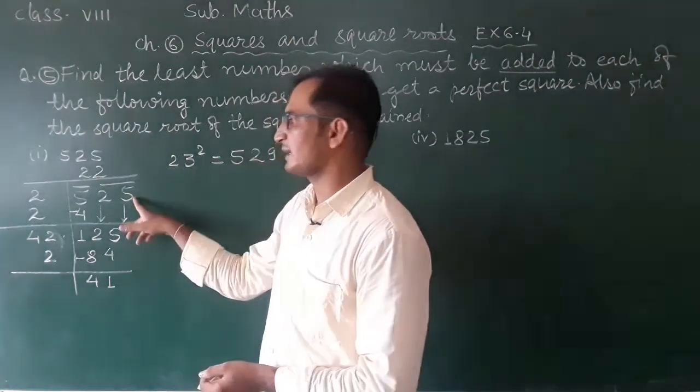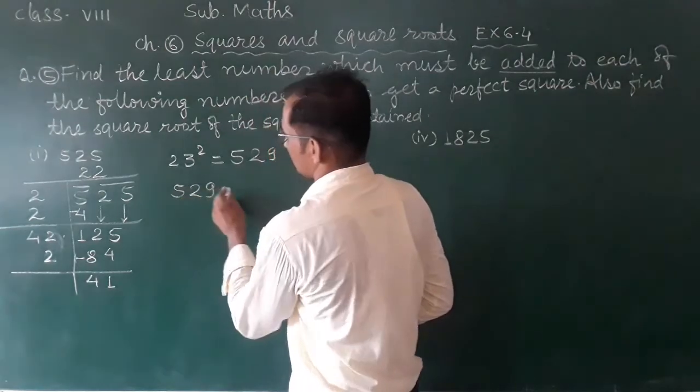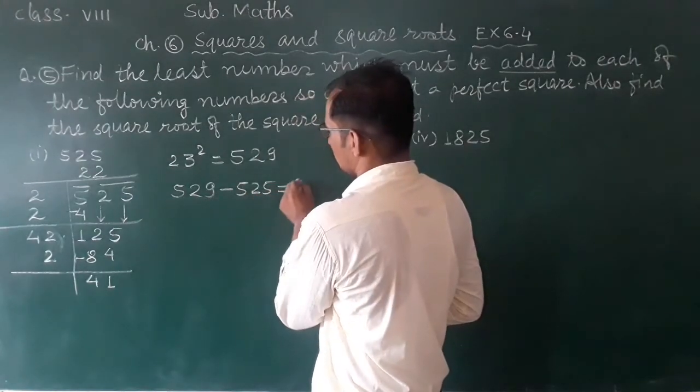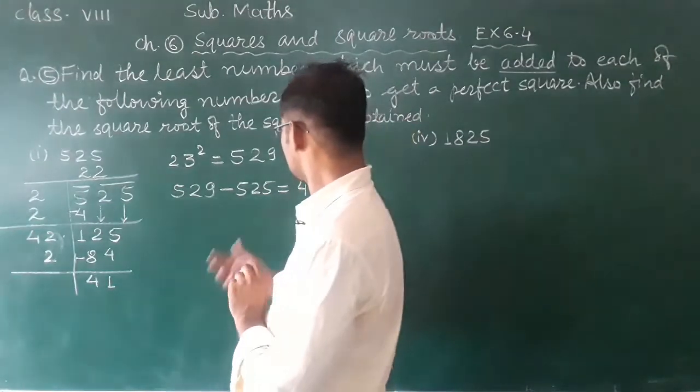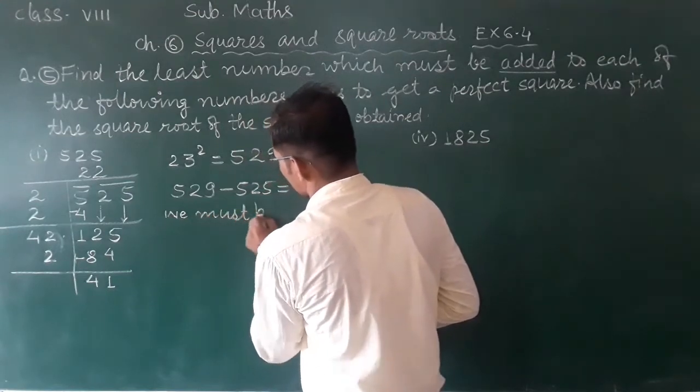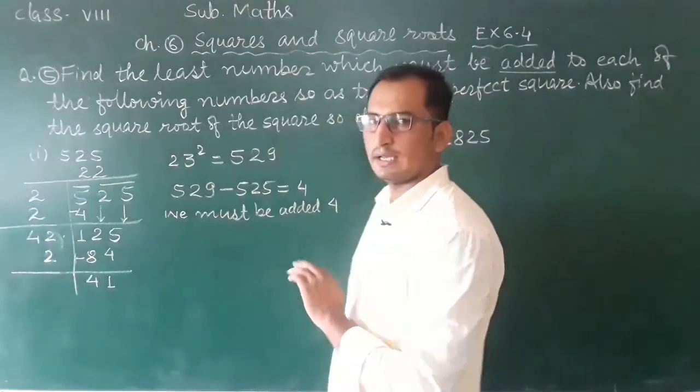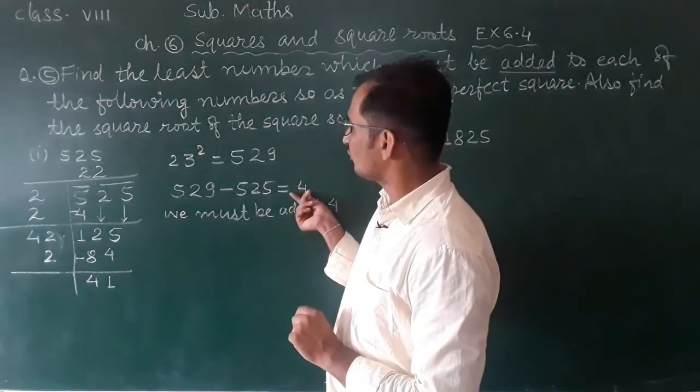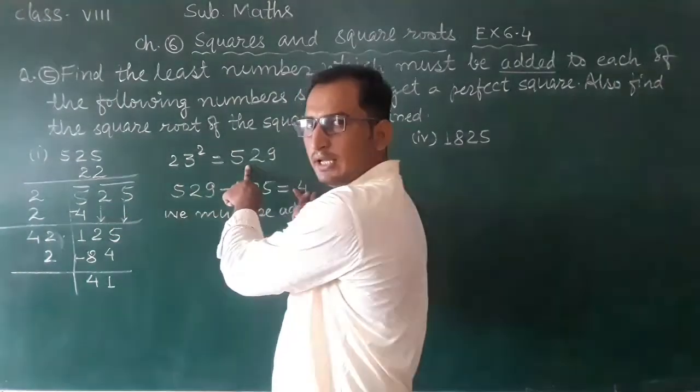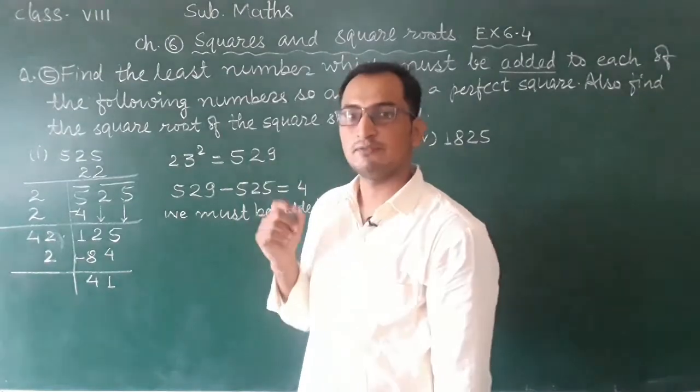Now what must be added to the number? We subtract: 529 minus 525. 9 minus 5 is 4. So we must add 4 to get a perfect square number. When you add 4 to 525, you get 529, which is the square of 23, meaning 529 is a perfect square number.